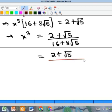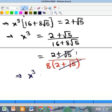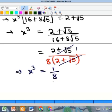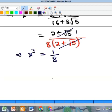At this point we can easily cancel these. You have 1 up here so that means that x to the power of 3 is simply equal to 1 over 8.